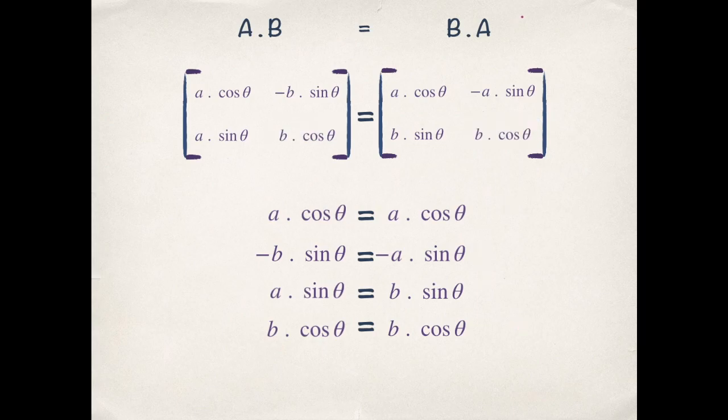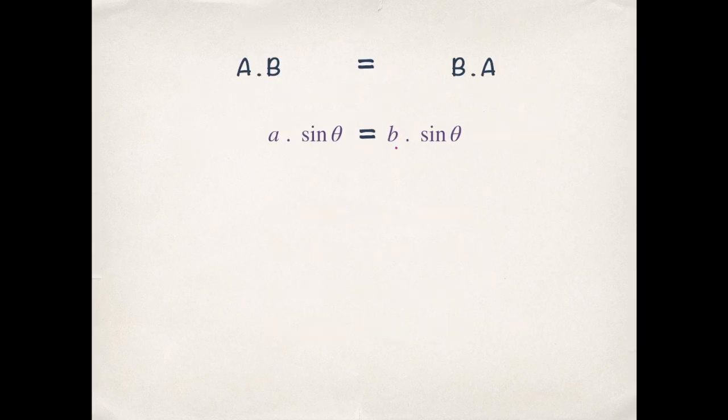Now let's solve this equation. In order to solve this equation we take the right hand side to the left and take sin θ common. Now this is 0 when either sin θ is 0 or a minus b is 0.